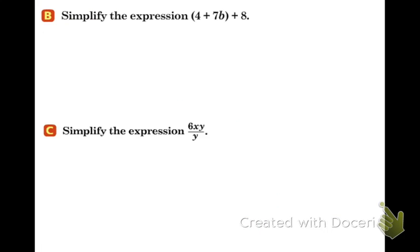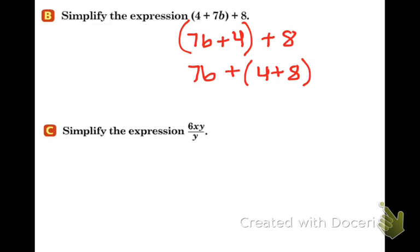In example 2, we have the quantity of 4 plus 7b, plus 8. First we're going to change the order inside the parentheses. The whole goal is to get the 4 and the 8 together because they're like terms: 7b plus 4 plus 8. And now we're going to change the parentheses and shift them over to the right. So 7b + (4 + 8). What's 4 plus 8? 12. So we have 7b plus 12.